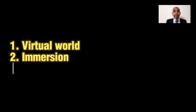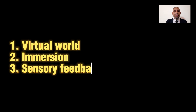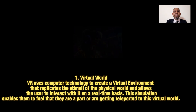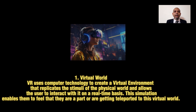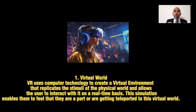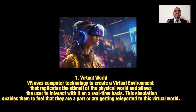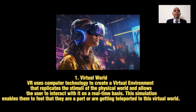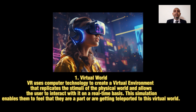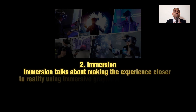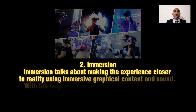Question number three: what are the elements of virtual reality? There are four elements: number one, virtual world; number two, immersion; number three, sensory feedback; and number four, interactivity. Element number one: virtual world. Virtual reality uses computer technology to create a virtual environment that replicates the essence of the physical world and allows the user to interact within their own real virtual world. This simulation enables them to feel that they are teleported into this virtual world.